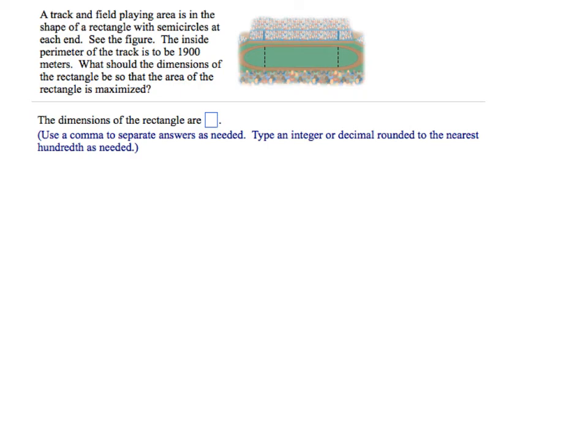This problem involves finding the maximum area of a geometric shape, so we should start by drawing a picture that we can label. Remember, our goal is to use just one variable if we can. In the picture, we have a track that looks like that.